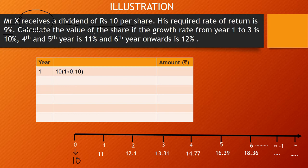You have to calculate the value of the share if the growth rate from year 1 to 3 is 10 percent, meaning dividends will grow by 10 percent during those years. In the fourth and fifth year the dividend will grow by 11 percent, and in the sixth year onwards the dividend will grow by 12 percent — that means after the sixth year the growth rate of dividend becomes constant indefinitely.